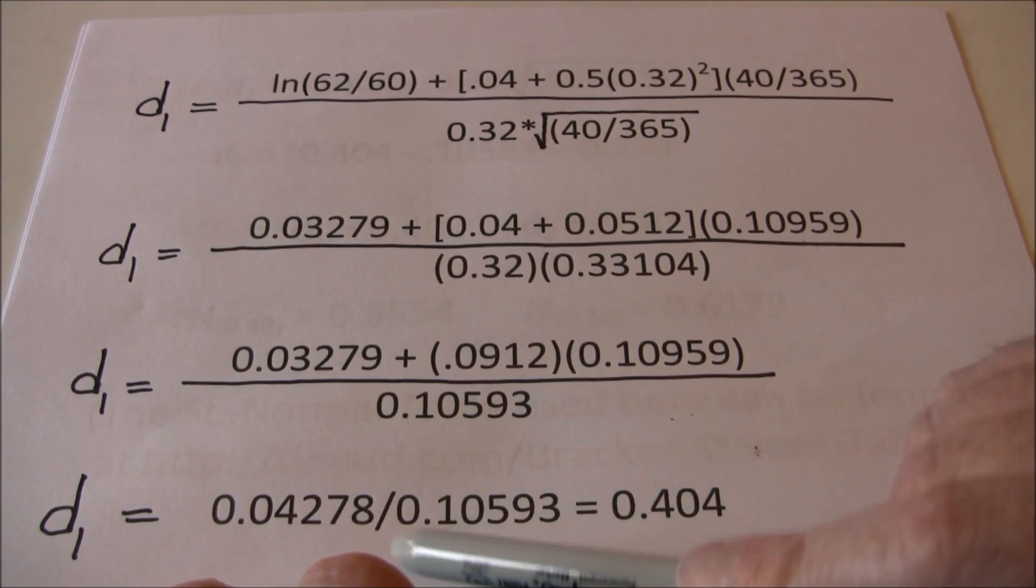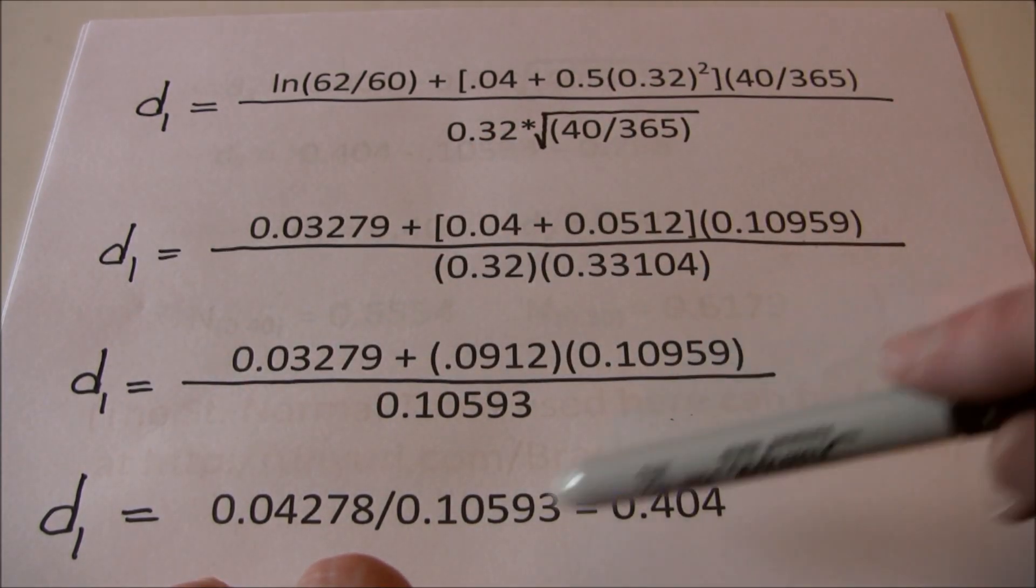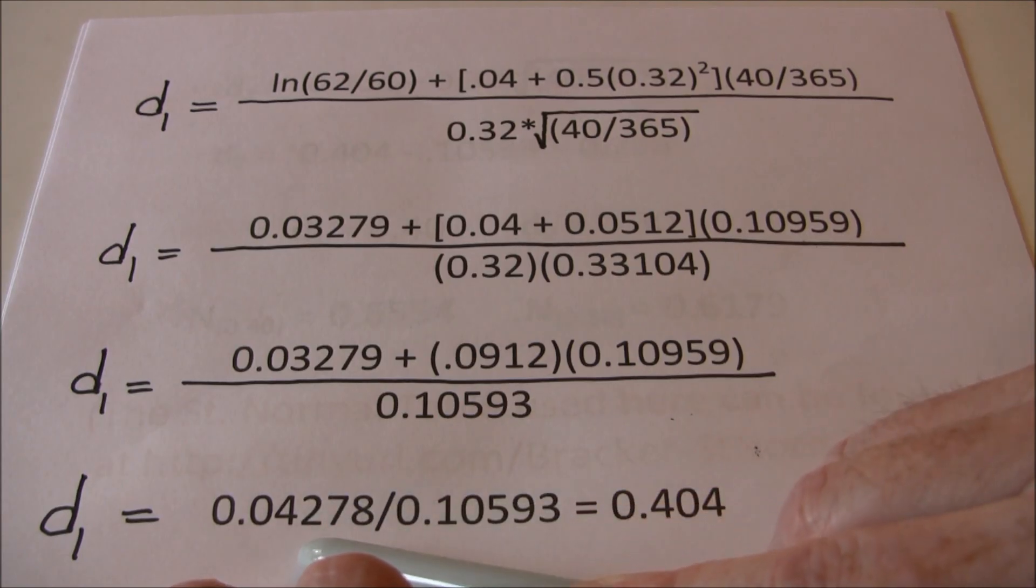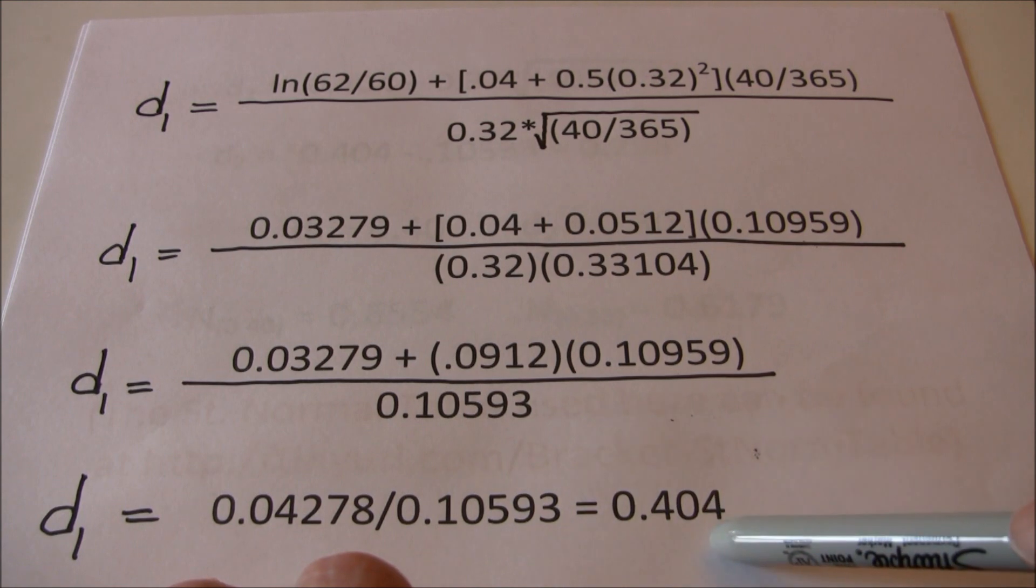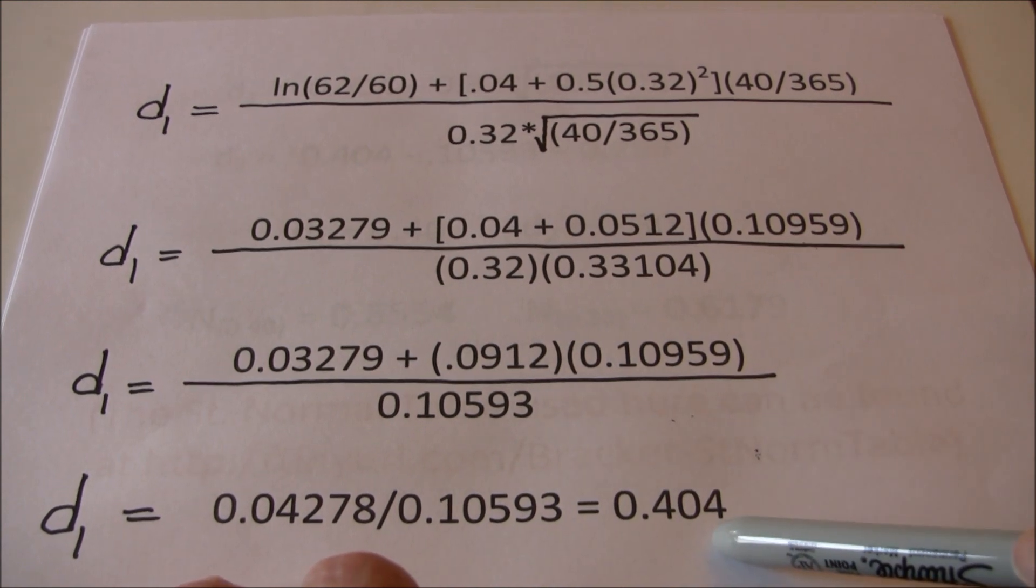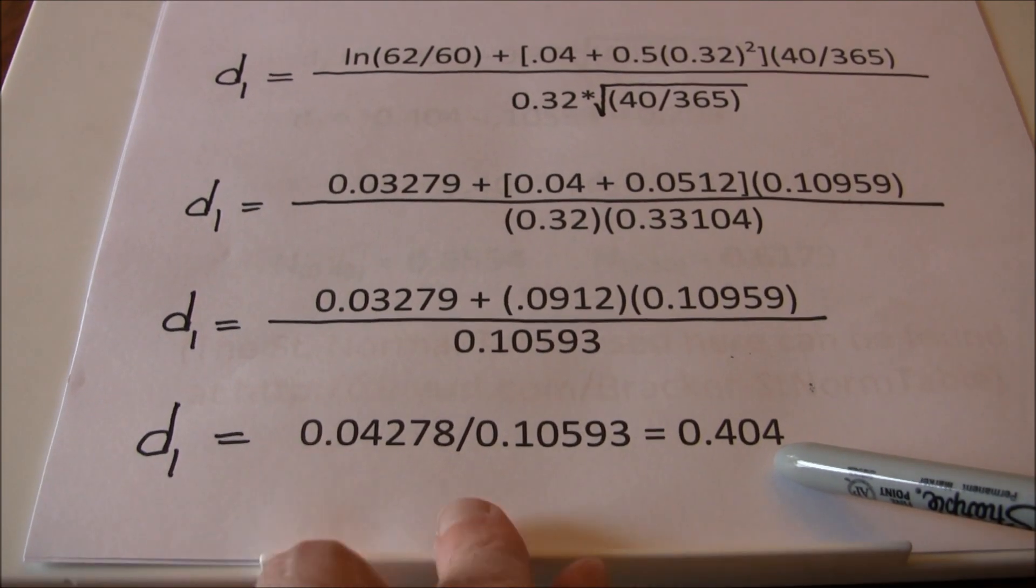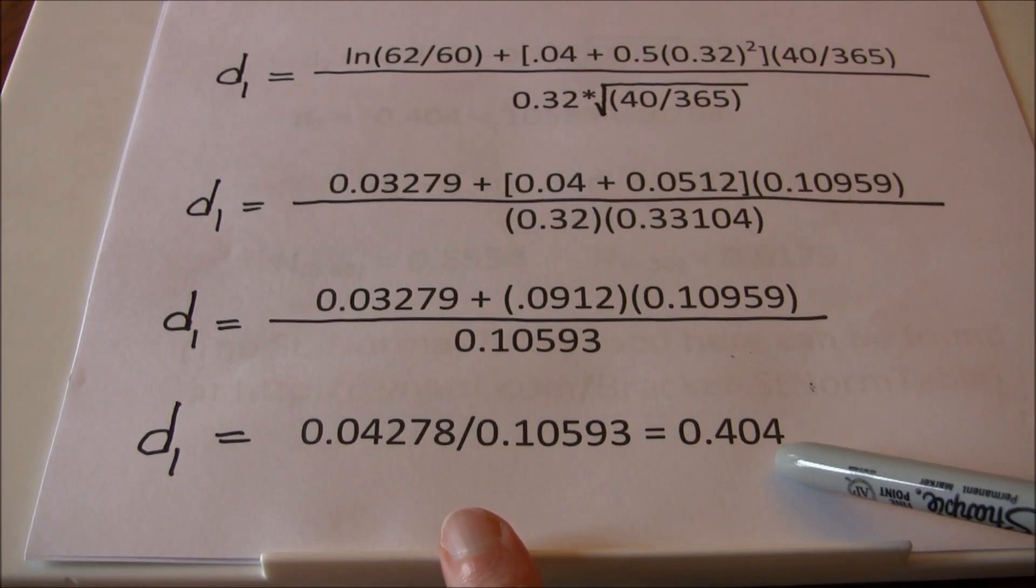Last step, add all this up, we get 0.04279, divide by the 0.10593 and that gives us 0.404. So our D1 is 0.404.